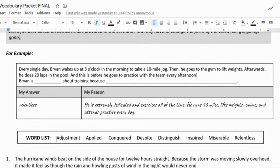Here we go. Here's your word list down here, and here's the example. 'Every single day Brian wakes up at five o'clock in the morning to take a 10-mile jog.' That's a lot, that's a long jog. 'Then he goes to the gym to lift weights.' This guy is crazy. 'Afterwards he does 20 laps in the pool.' Okay, I'm just—there's no way. And this is before he goes to practice with the team every afternoon. Dude, Brian is wild.